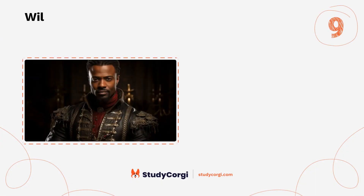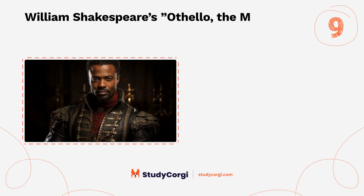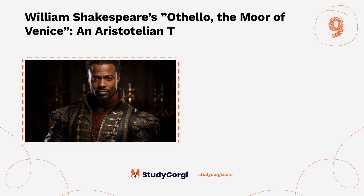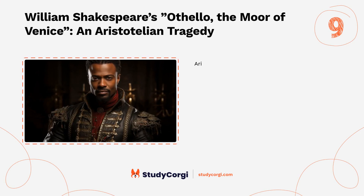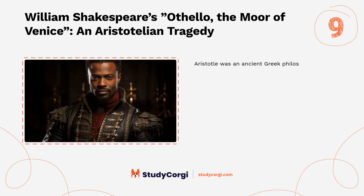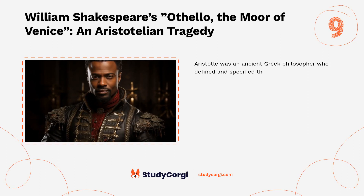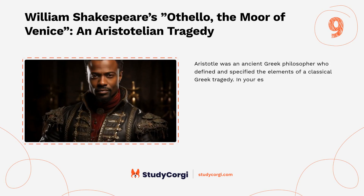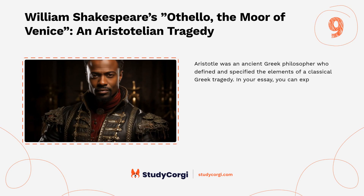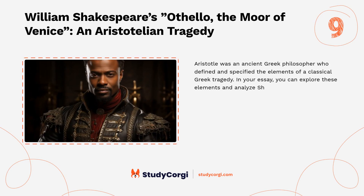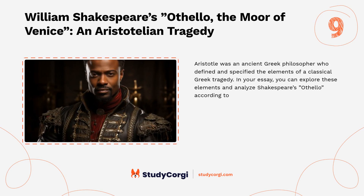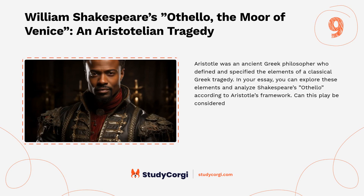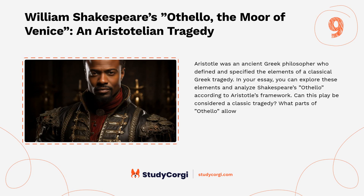William Shakespeare's Othello, the Moor of Venice: an Aristotelian tragedy. Aristotle was an ancient Greek philosopher who defined and specified the elements of a classical Greek tragedy. In your essay you can explore these elements and analyze Shakespeare's Othello according to Aristotle's framework. Can this play be considered a classic tragedy? What parts of Othello allow you to reach your conclusion?